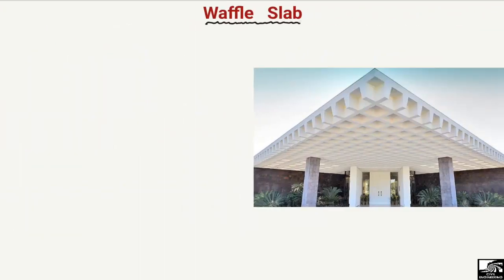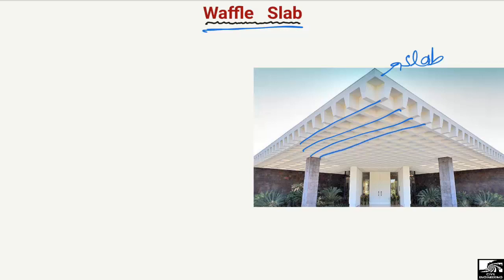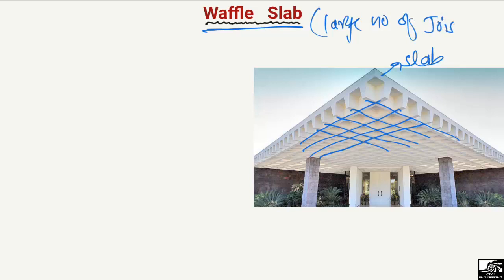The next type of slab is the waffle slab, where a large number of small beams are provided in the slab in order to carry the load. If we look at the figure, on top we have the slab, and it is supported by small thickness members called joists provided in both directions. The shape of the slab looks like a waffle biscuit, which is why it is called the waffle slab. It is mostly used to produce lightweight structures.